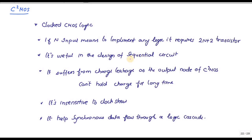C-squared CMOS logic suffers from charge leakage, as the open node cannot hold the charge for a long time. However, it is advantageous because it is insensitive to clock state. This logic helps synchronous data flow through a logic cascade.